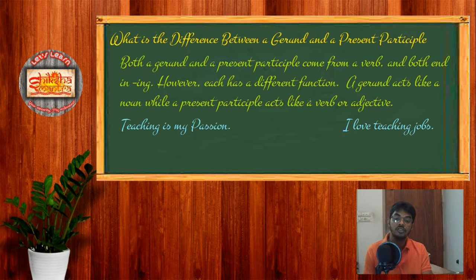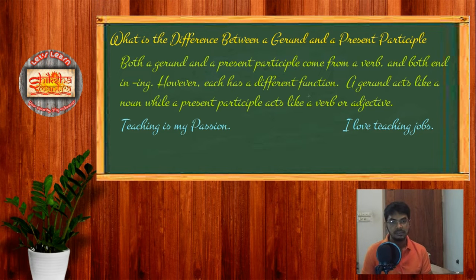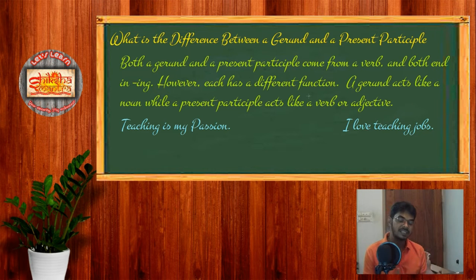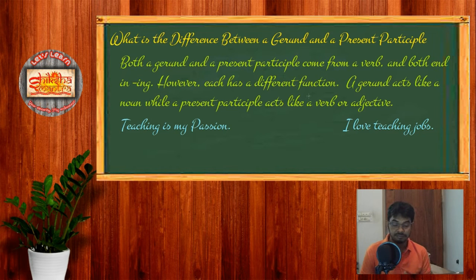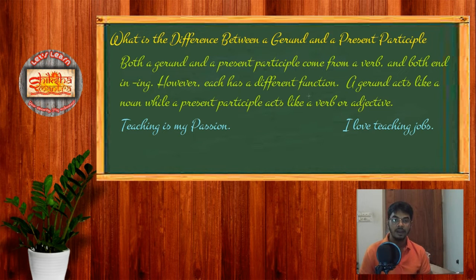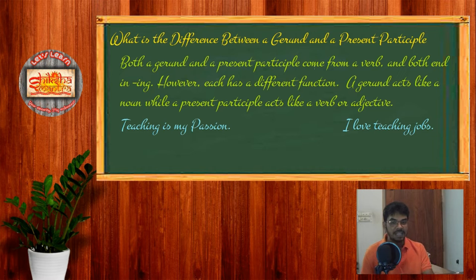Both gerund and participles are called verbals — or nouns, or some other parts of speech like adjective — that are formed from verbs. So basically they are a verb form. Gerunds and present participles are derivatives of verb forms, and both end in -ing.